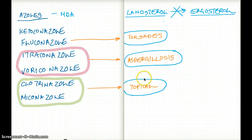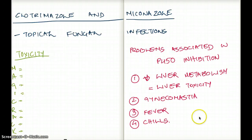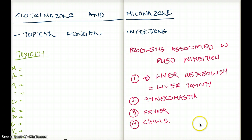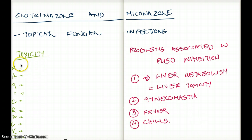Now let's talk about the toxicities of the azoles. We know that azoles are P450 inhibitors. Do you remember all the P450 inhibitors? The mnemonic is MAGIC RACS — let's see if we can remember them.